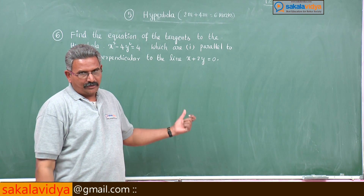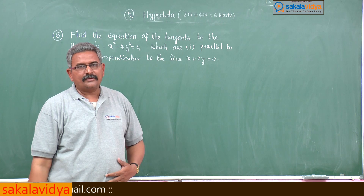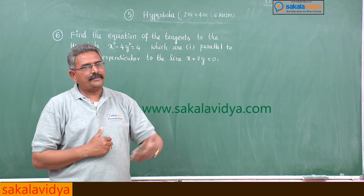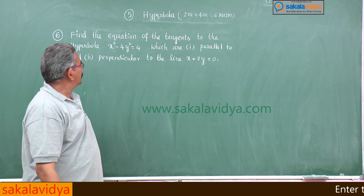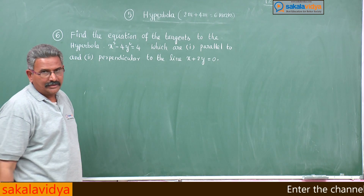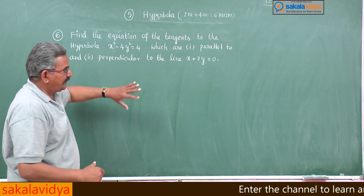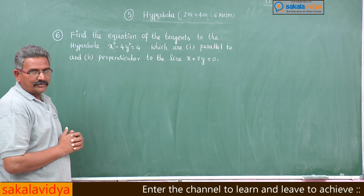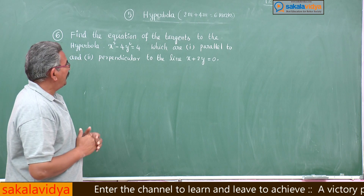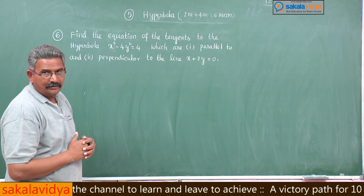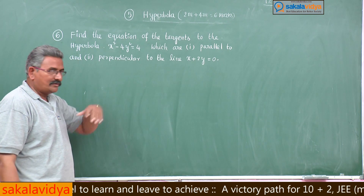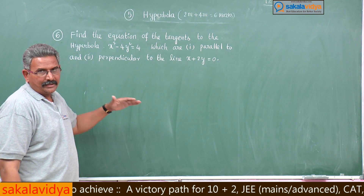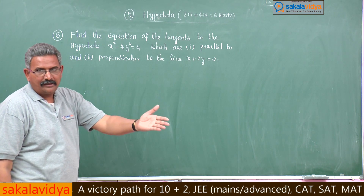Before doing this problem, let us follow some steps and make a plan. First, we have to put the given equation of the hyperbola in standard form. For the first part, any equation of the line parallel to x + 2y = 0 can be written as x + 2y + k = 0. Apply the condition for tangency to get the value of k.